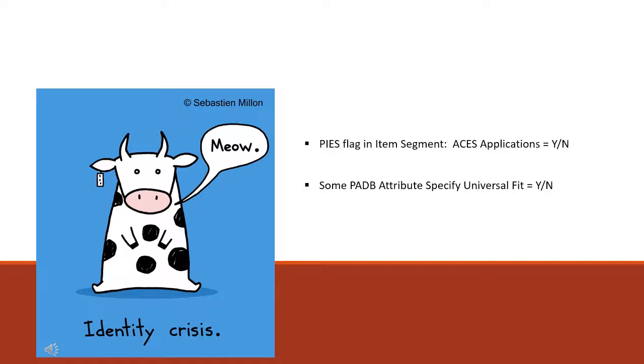So that's about what we've got available for us in PIES today. Now, what we don't have is data in an ACES file. And the absence from having this part number in an ACES file can lead us into potential challenges for universal parts.